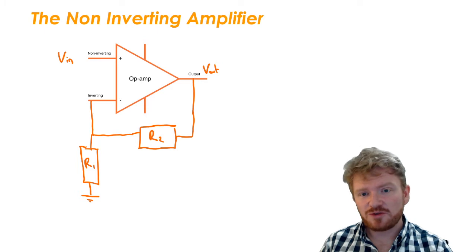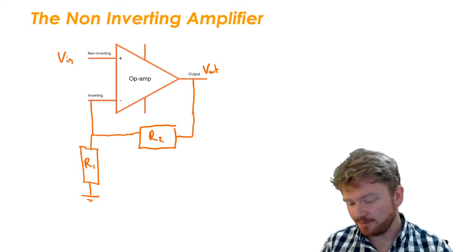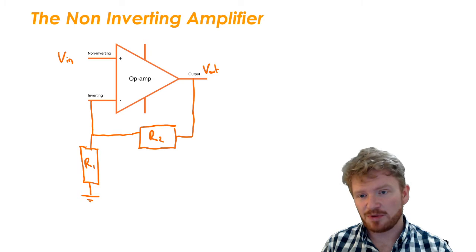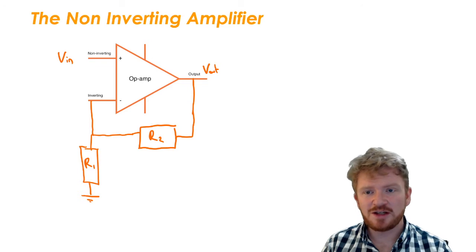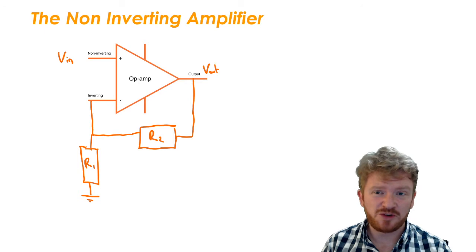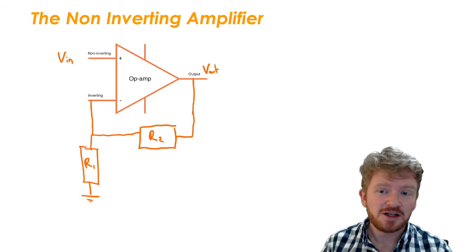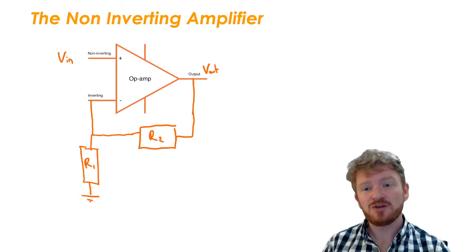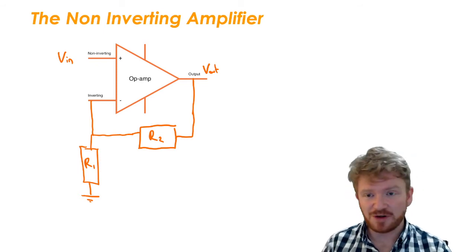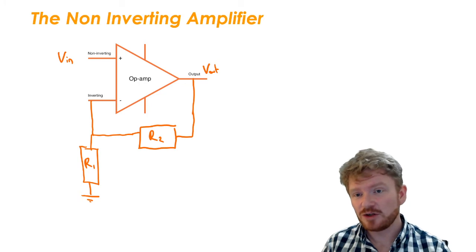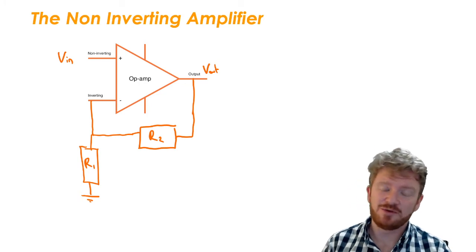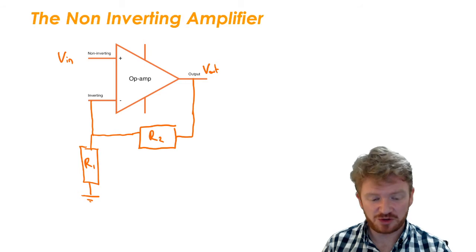So what I have drawn in front of you is the circuit diagram for the non-inverting amplifier. And you can see it's slightly different to the previous one. I now have VIN connected to my non-inverting input. So quite an easy way of telling whether you're dealing with an inverting or non-inverting input is if VIN is connected to the inverting input, then it's an inverting amplifier. If VIN is connected to the non-inverting input, then it's a non-inverting amplifier.